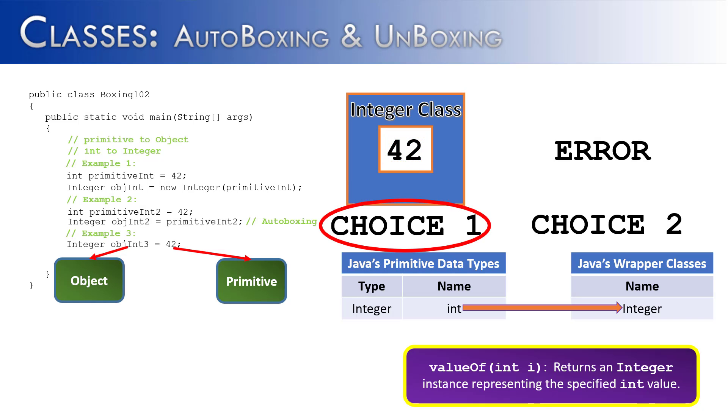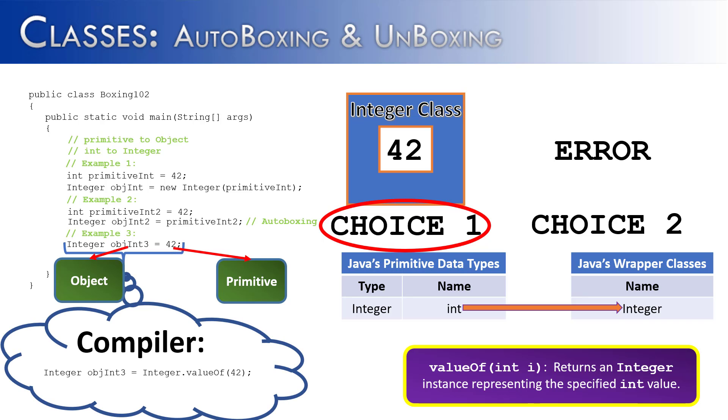And what it's going to do is choice number 1. It's going to autobox it. It's going to call the method valueOf on 42, which takes that 42 and converts it into an integer object.